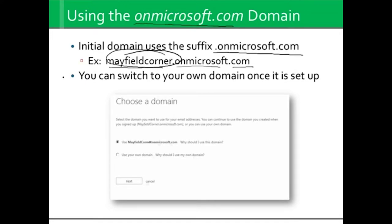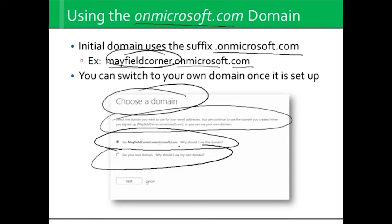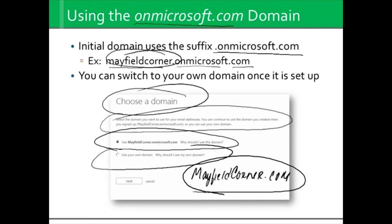Because I know this account was for Mayfield Corner LLC, I'm going to try to come up with an initial prefix that sounds something like where I'm going when I'm done. Once you've got all the setup steps done, you get to actually choose which domain to use — for example, select a domain you want to use for your email addresses. Do you want to use mayfieldcorner.onmicrosoft.com, or do you want to use your own domain? When we say use your own domain, there are some steps to prove it's yours. There are some DNS entries that have to be made, but this will help you flip everything, including user accounts and email addresses over.